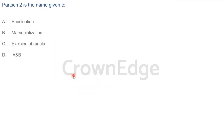Next question: Partsch 2 is the name given to: A) enucleation, B) marsupialization, C) excision of ranula, D) A and B. This is a straightforward question but the options can be confusing. Many people answer D or B, but both are incorrect. The answer is A — enucleation. Let me clarify the three procedures.